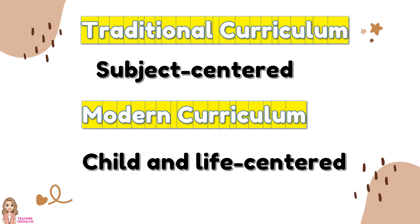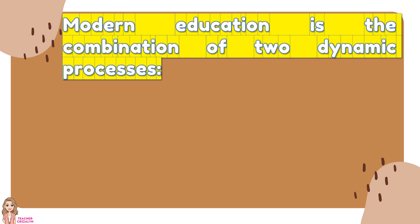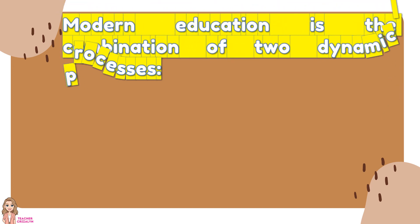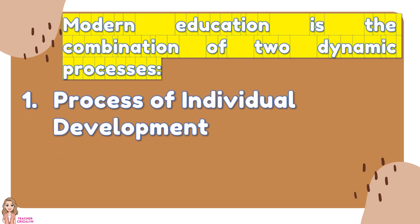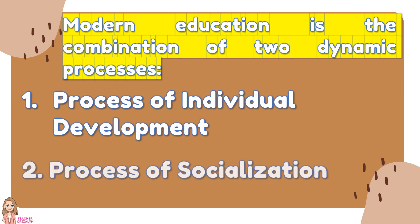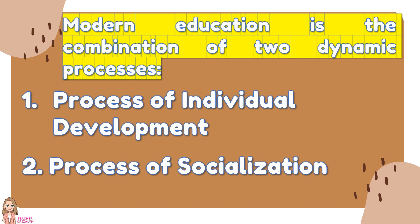We will focus on the discussion of the modern curriculum. Modern education is the combination of two dynamic processes. First is the process of individual development, wherein the developmental milestones and developmentally appropriate practices are taken into consideration while making the modern curriculum. The second is the process of socialization, wherein activities related to socialization of the students are included. The activities in the curriculum are more cooperative and collaborative.